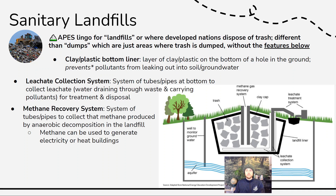Then we have a methane recovery system, consisting of pipes that go down into the landfill. Due to anaerobic decomposition — there not being enough oxygen for fully aerobic decomposition — a lot of methane (CH₄) is produced. These pipes can harvest it, and sometimes it can be used to heat buildings or produce electricity. It needs to be removed so that the volume of the landfill doesn't expand and to prevent potential explosions or methane gas leaking out.